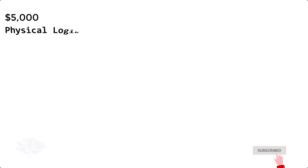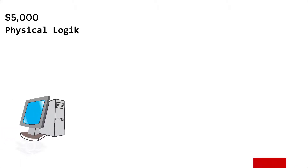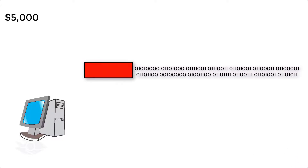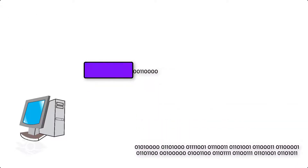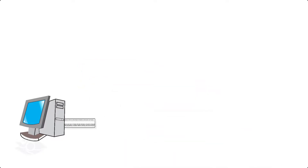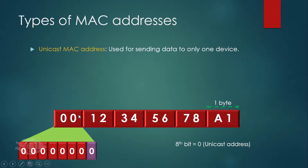It's easy for you to read values like $5,000 or text like 'physical logic', but computers don't understand things this way. They have to break data into its smallest form, called bits, meaning data consisting of only ones and zeros. Each digit in the MAC address is 4 bits, making up 48 bits in total. Two digits together is called a byte, so a MAC address consists of 6 bytes.